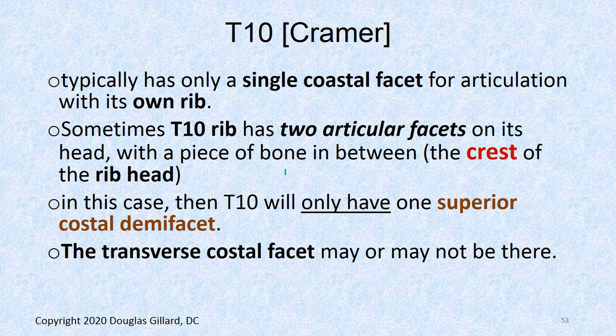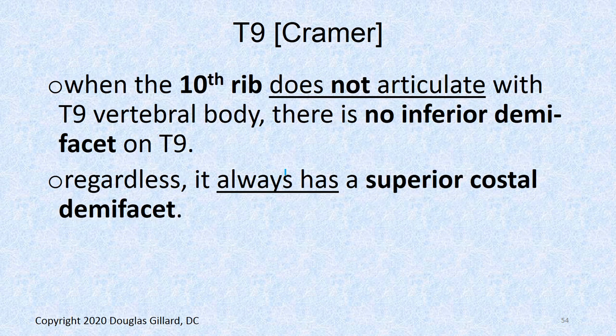At T9, when the T10 rib does not articulate with the T9 vertebral body at all — when the T10 rib has only one articular facet — there will be no inferior costal demi-facet at T9. But if the T10 rib has double articular pads, then T9 will have an inferior costal demi-facet. It all depends on rib development. Nevertheless, T9 always has a superior costal demi-facet, so that's where we go back to normal.